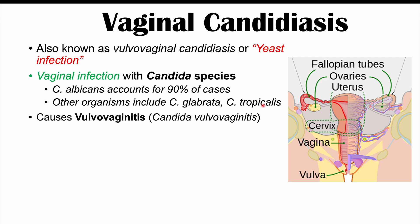These fungal species can cause what we call vulvovaginitis, meaning the vulva and the vagina are inflamed. When candida species cause vulvovaginitis, we call this candida vulvovaginitis. This condition can be described by many different names, but we'll mostly use the term vulvovaginal candidiasis, as this describes that both the vulva and vagina can be affected.